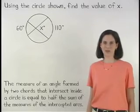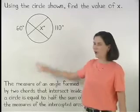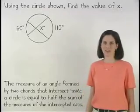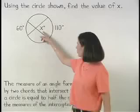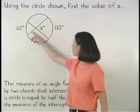In this example, we're asked to use the circle shown to find the value of x. Notice that x represents the measure of an angle formed by two chords.